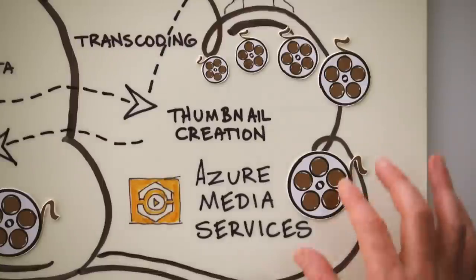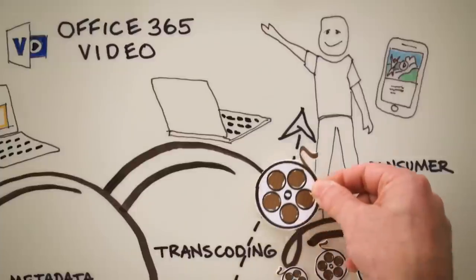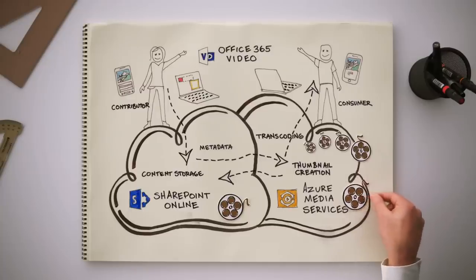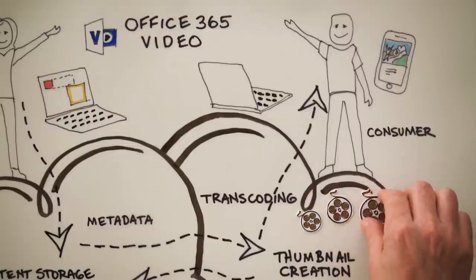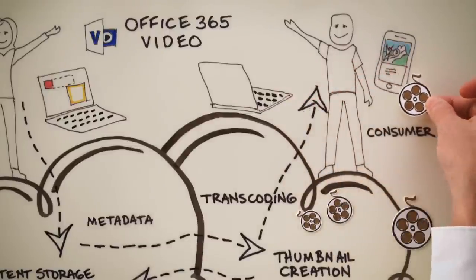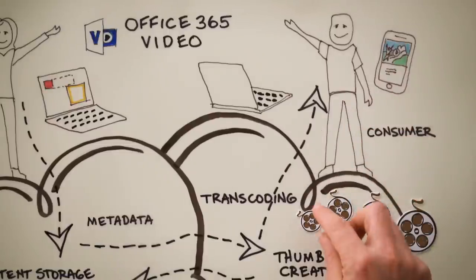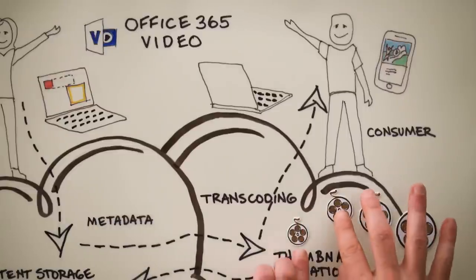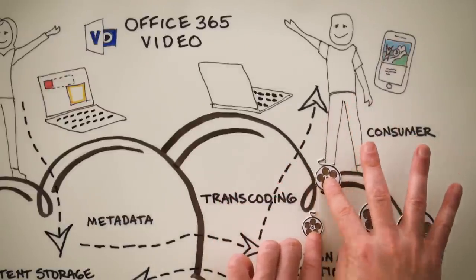Now, if we detect a desktop, Mac, or PC on a good connection, we'll send a high-resolution file. If at any point we detect that the bandwidth goes down or the original request comes from a smaller device, the service will provide or switch to a smaller video resolution. Throughout playback, the service monitors and adjusts everything silently in the background about every two seconds to continuously provide the best possible playback experience.